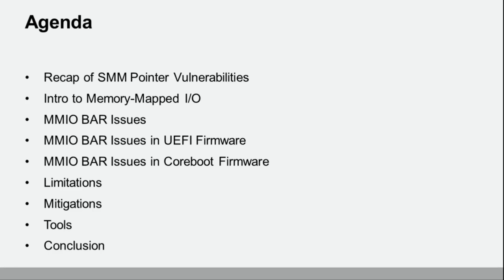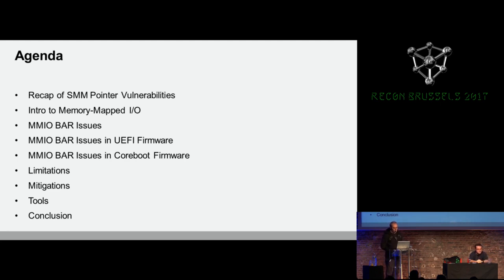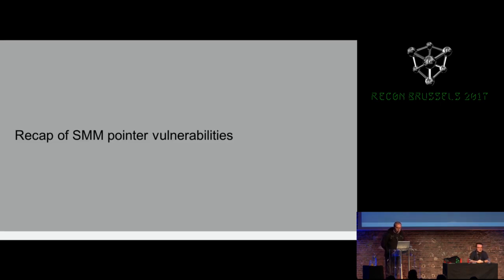So today we will present a new type of vulnerability. In our agenda we have a small recap about the previous vulnerabilities, then an introduction about memory, then a description about the MMIO bar overlap issue, examples of this issue in UEFI firmware and coreboot firmware, limitations, mitigations, tools, and conclusion. The recap is really important for this presentation because the vulnerability is a little bit similar to the previous one in many perspectives and exploitability in the modules when we found them.